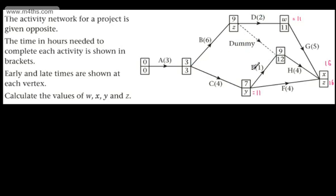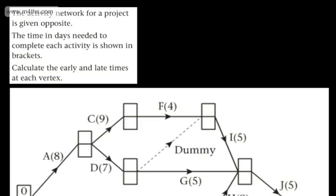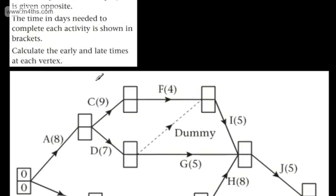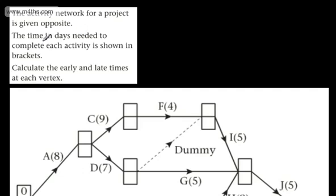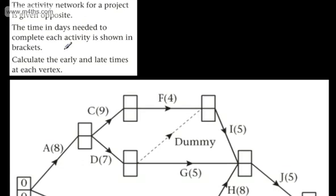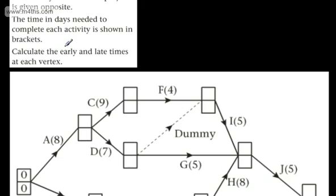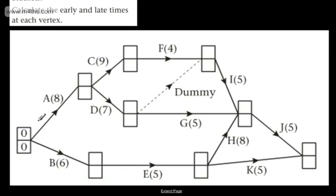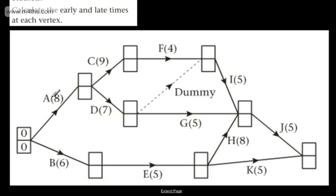Let's now look at another example. The activity network for a project is given, with the time in days needed to complete each activity shown in brackets. We need to calculate the early and late times at each vertex. With the source node, we're always going to have nought, nought — so we'll have nought, nought there.